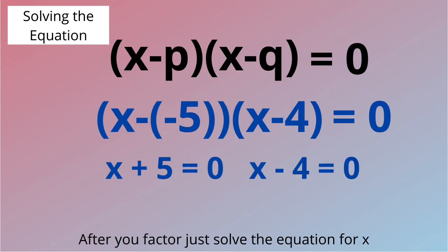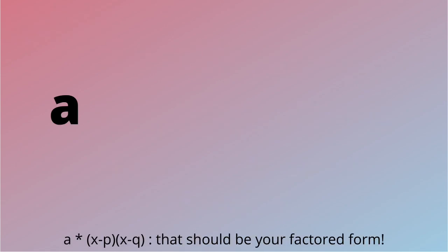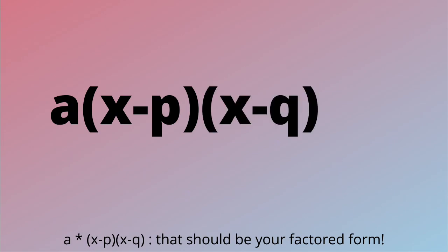After you factor, just solve the equation for x. The x's are p and q in a times x minus p times x minus q. That should be your factored form.